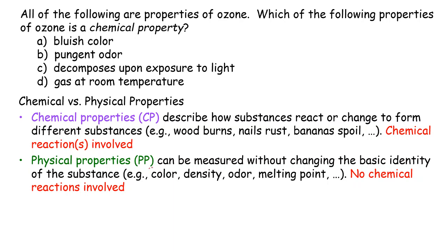Now, physical properties — there are no chemical reactions involved. That's the key concept. Physical properties can be measured without changing the basic identity of the substance, meaning no chemical reaction. For example, the color of your t-shirt, whether it's red or yellow, is a physical property. Density of water is about one gram per milliliter — no chemical reaction, just a physical property. Odor, melting point, boiling point, and so on are all physical properties.